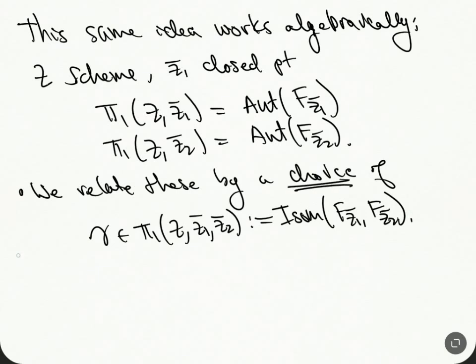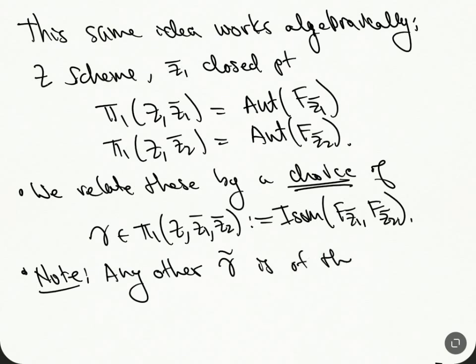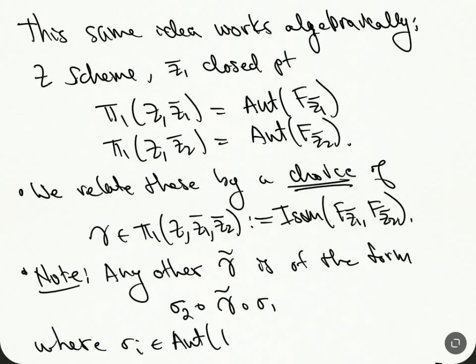We make a choice, and we observe that any other choice Gamma-tilde differs in the following way: Gamma-tilde = Sigma₂ composed with Gamma composed with Sigma₁, where Sigma_i are automorphisms of F(Z_i-bar). So any other choice is related to our original choice by automorphisms of the source and target fiber functors.